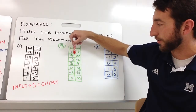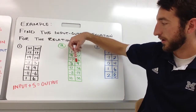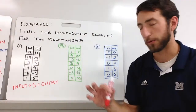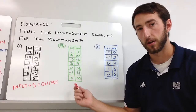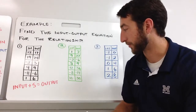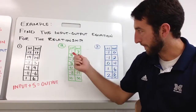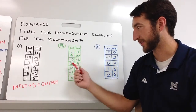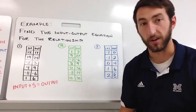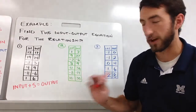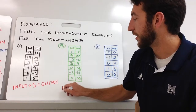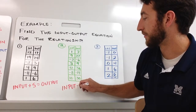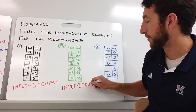For the next table: one maps to three, nine maps to twenty-seven. It looks like there's more going on than just adding or subtracting. Since it's getting bigger it's probably multiplication. One times three is three, nine times three is twenty-seven — check it for all of them. So this one is: input times three equals output.